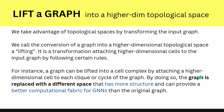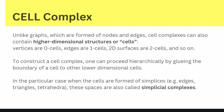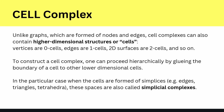By doing so, the graph is replaced with a different space — and this is important. The graph is replaced with a different space that has more structure and can provide a better computational fabric for graph neural networks than the original graph. We are deeply in algebraic topology and mathematics, but I want to explain the idea to you.